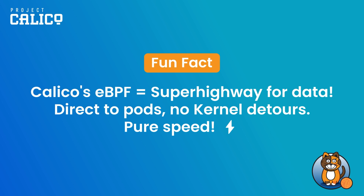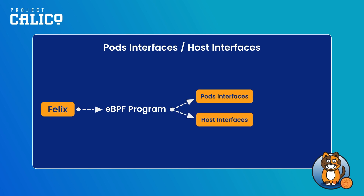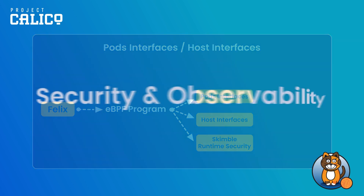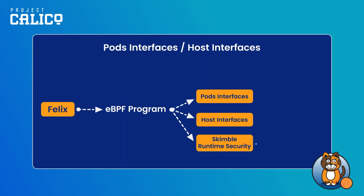Now that we know how the eBPF data plane works, let's see what happens when you enable it in Calico. Felix, the brain of Calico, creates eBPF programs and dispatches them to your pod interfaces and your host interfaces. In Calico Enterprise and Calico Cloud, it also runs Skimble, a runtime security binary, and provides the foundation for observability and monitoring capabilities like dynamic service and threat graph.